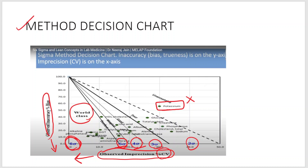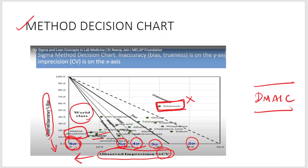In the Method Decision Chart, you can see that potassium lies in the unacceptable performance zone, so we have to change the methodology and make corrections for that method. On the other hand, alkaline phosphatase lies in the 5 to 6 sigma performance zone, which is very good. GGT and amylase are also analytes showing the best performance in this particular laboratory.